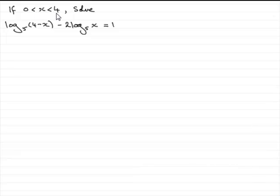Why must x lie between 0 and 4? Well, if x were greater than 4, 4 minus x would be a negative number, and you cannot log a negative number. And if x was 0 for this term, you can't log 0. You'd get an error on your calculator.